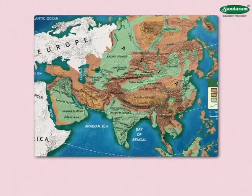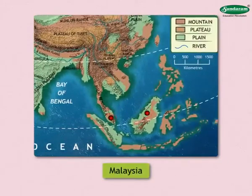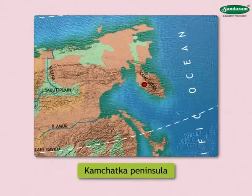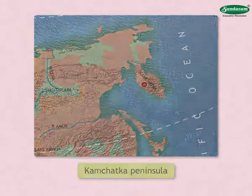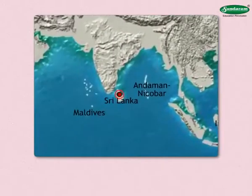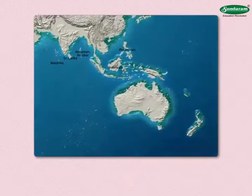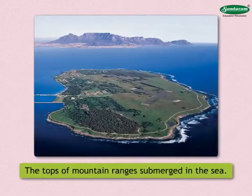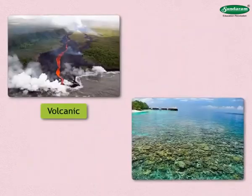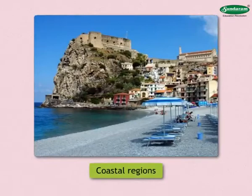Peninsulas: There are many peninsulas towards the south of this continent. The important peninsulas are those of Saudi Arabia, India, Malaysia, etc. The Kamchatka Peninsula is in the northeast of the continent. Islands: Japan, Indonesia, Philippines, Sri Lanka, Maldives, Andaman-Nicobar, etc. are the islands in the continent of Asia. These islands are either the tops of mountain ranges submerged in the sea or volcanic or coral islands. The central part of most of these islands is mountainous, with plains in their coastal regions.